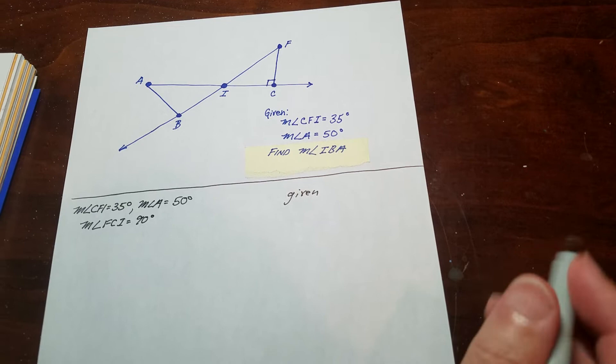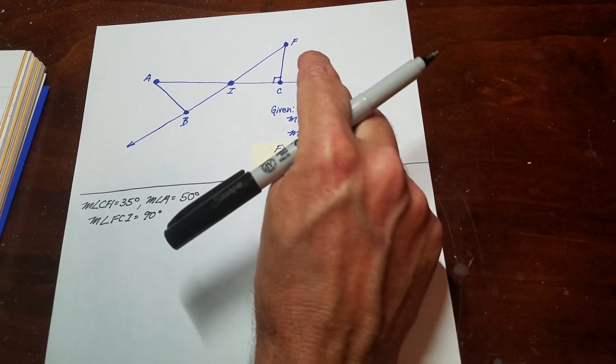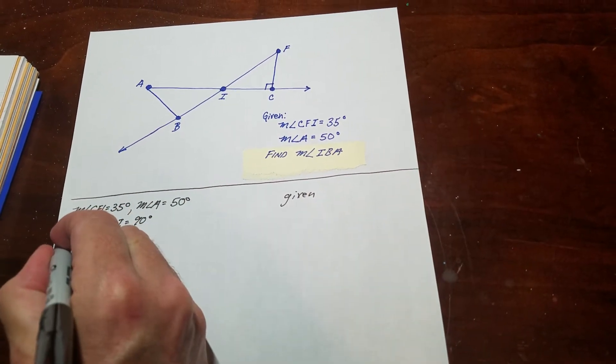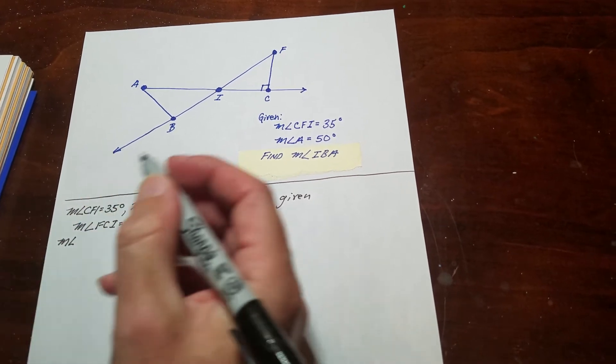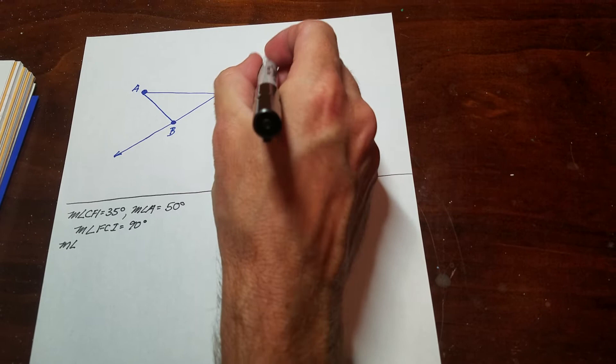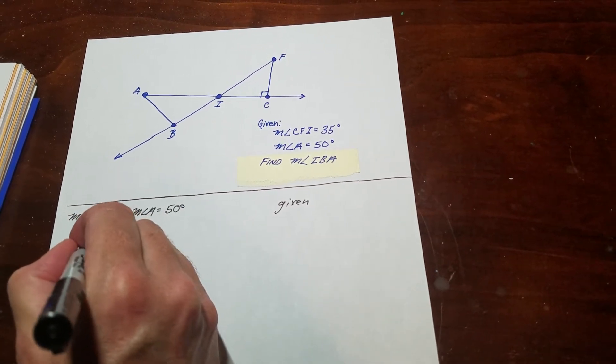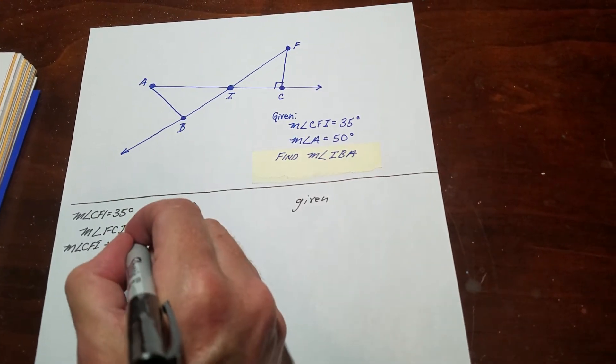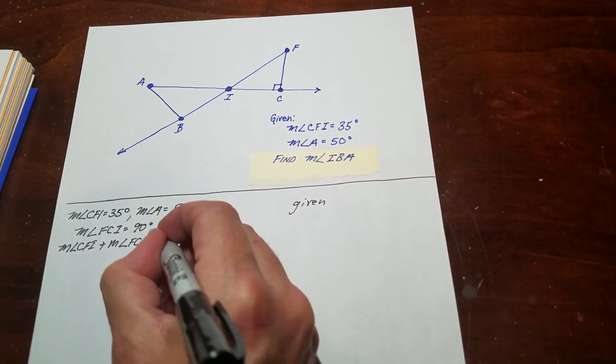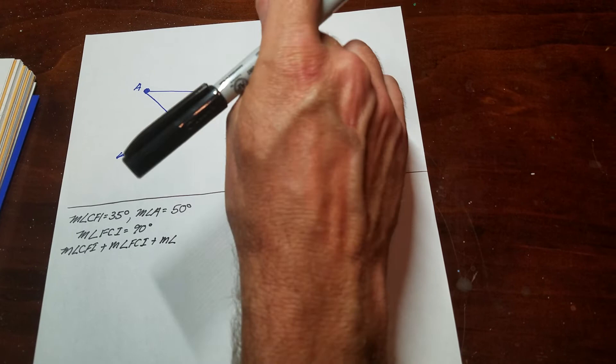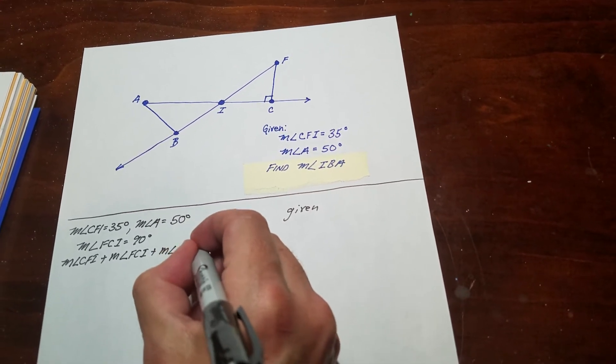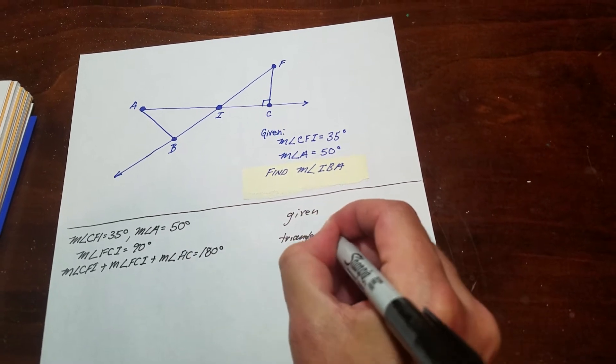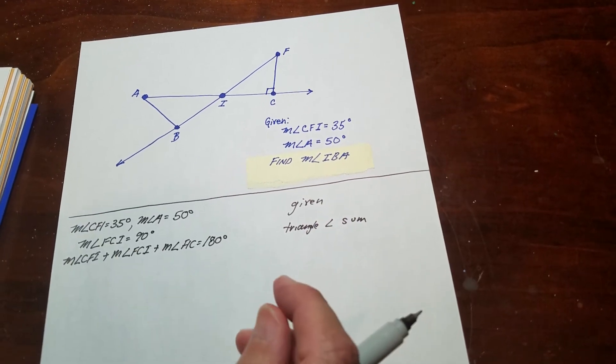The first thing I'm going to do is look up here because I know two of the angles in this triangle. The measure of angle CFI plus the measure of angle FCI plus the measure of angle FIC equals 180 degrees, because of the triangle angle sum theorem. All angles in the interior of a triangle add to 180 degrees.